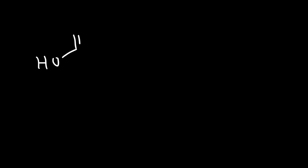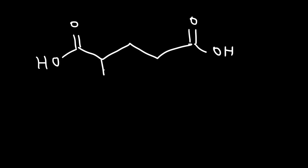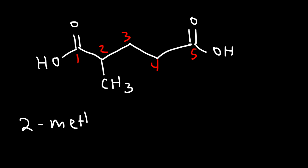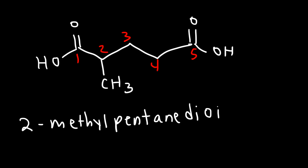Now sometimes you'll be given a molecule with 2 carboxylic acids, and so this is going to be called a dioic acid. We need to number it from left to right because the methyl group will be on carbon 2 as opposed to carbon 4. So to put this together, this is going to be 2-methyl, and then we have a 5-carbon chain — pentane — so 2-methylpentane dioic acid.